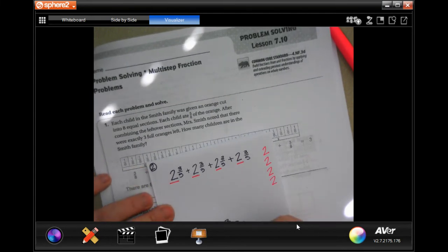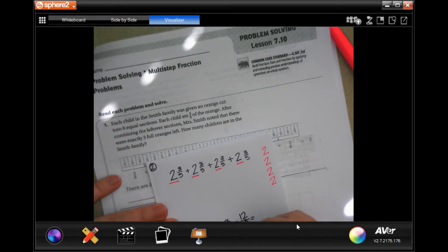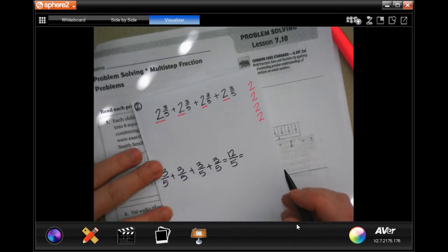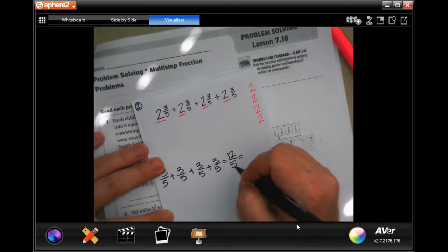Now we know my denominator is going to stay the same, but I have 3 plus 3 is 6, plus 3 is 9, plus 3 is 12. Now 5 goes into 12 - because the top, sorry I can't see that, so the top is bigger than the bottom, that doesn't work for us. So 5 goes into 12 two times.